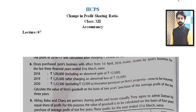First of all, write down 'Calculation of Actual Profit' for years 2018, 2019, 2020. For 2018, actual profit of 1 lakh is given, but it includes an abnormal gain. Abnormal gain is a kind of gain which is not an actual gain — it's not actual income. For the calculation of actual profit, such gain is subtracted. So 1 lakh minus 12,500 gives the actual profit for 2018.